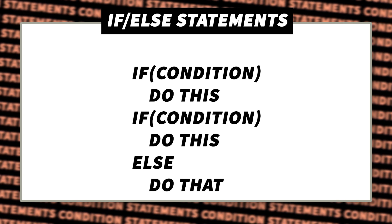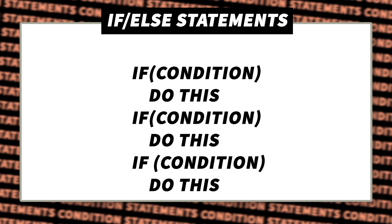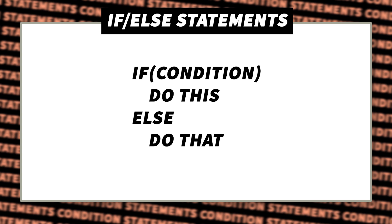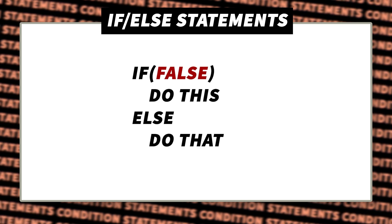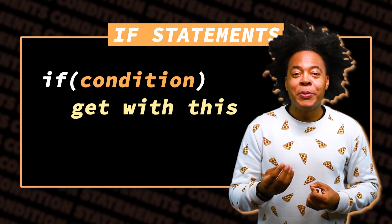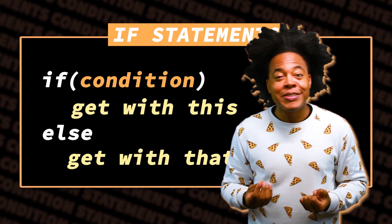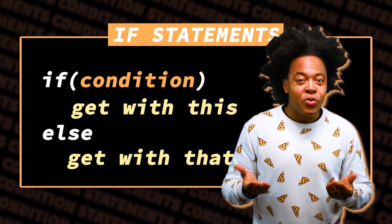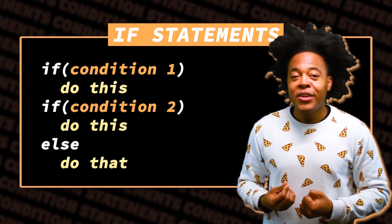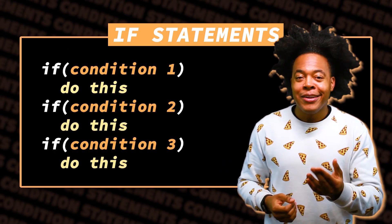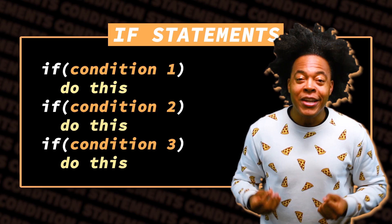Else statements allow us to give programs extra instructions to follow if the if doesn't happen. A program can have many if statements, but each if statement may only have zero or one else statement. The instructions for an else statement are only followed if the else's if is false. If statements — you can have more than one. Else statements — you can have one or none.